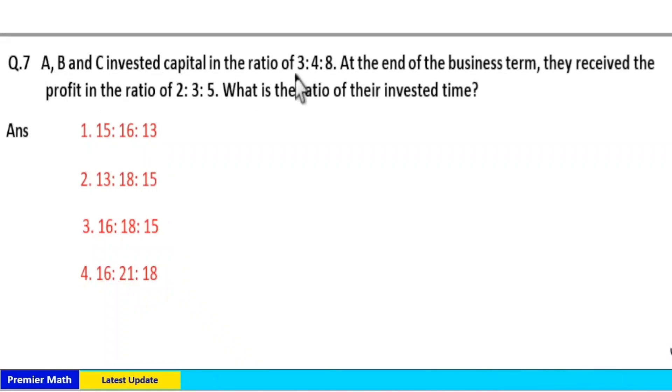A, B, and C invested capital in the ratio 3:4:8. At the end of the business term, they received profit in the ratio 2:3:5. What is the ratio of their invested time?